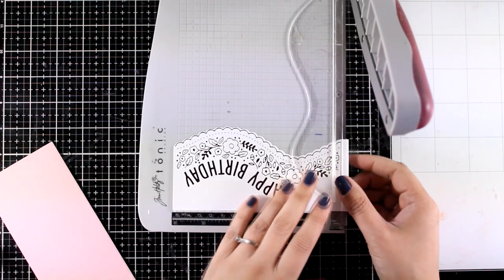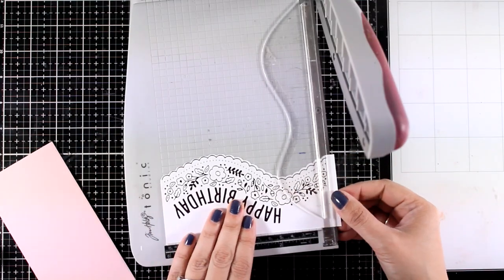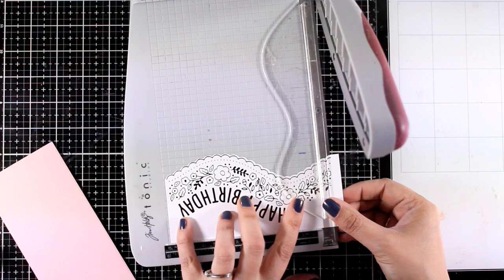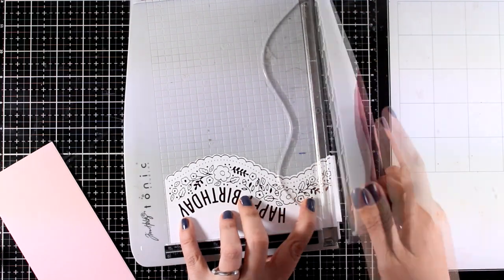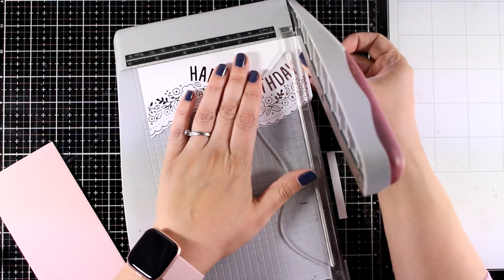I always like to have my layers slightly smaller than my actual card. This way I end up having a little border which always adds to the card. I think that it makes it look more finished.